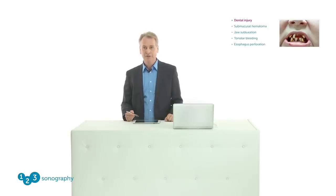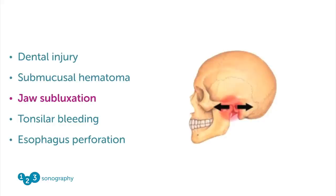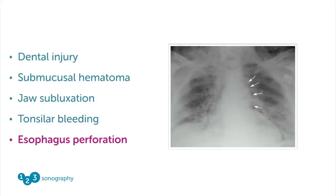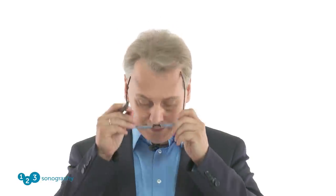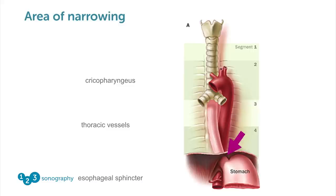Some of the problems you can run into include: dental injury, submucosal hematoma which occurs rather frequently, jaw subluxation, tonsillar bleeding from forceful introduction, and esophageal perforation — a rare but serious complication. Perforation can occur at a diverticulum, but usually at areas of narrowing: the cricopharyngeal area, where you have thoracic vessels, or further down at the esophageal sphincter.